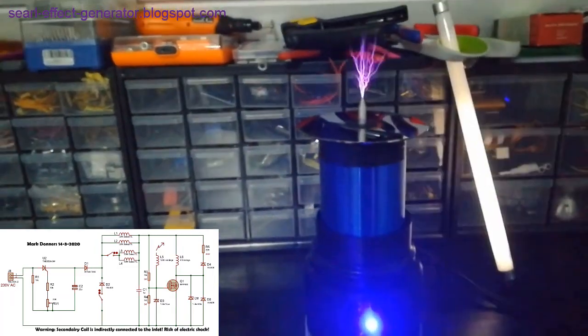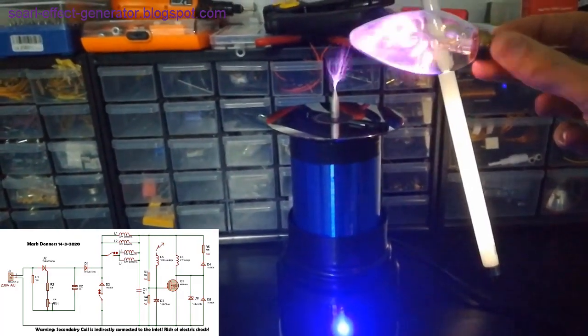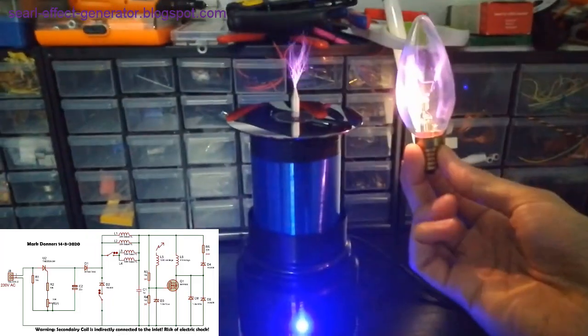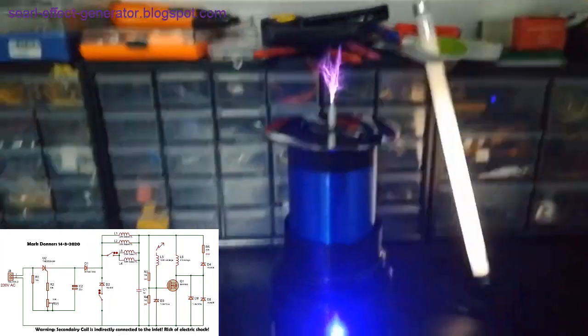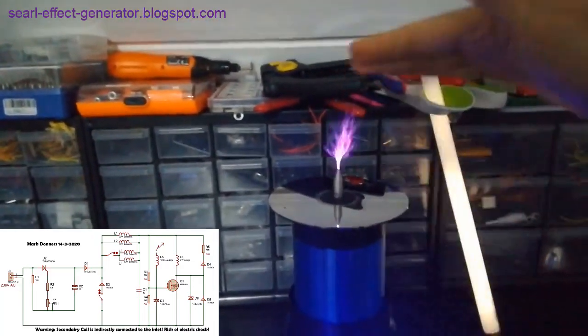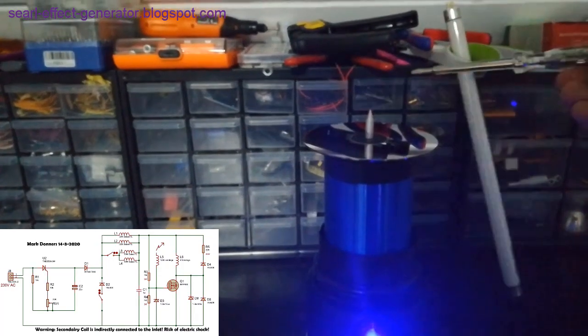Working with the Slayer Exciter, especially the Russian version, demands rigorous safety precautions due to the high power and high voltage involved. One-hand rule: Adhering to the one-hand rule is essential when the circuit is active. Always keep one hand in your pocket to minimize the risk of a current passing through your heart, which can be life-threatening.